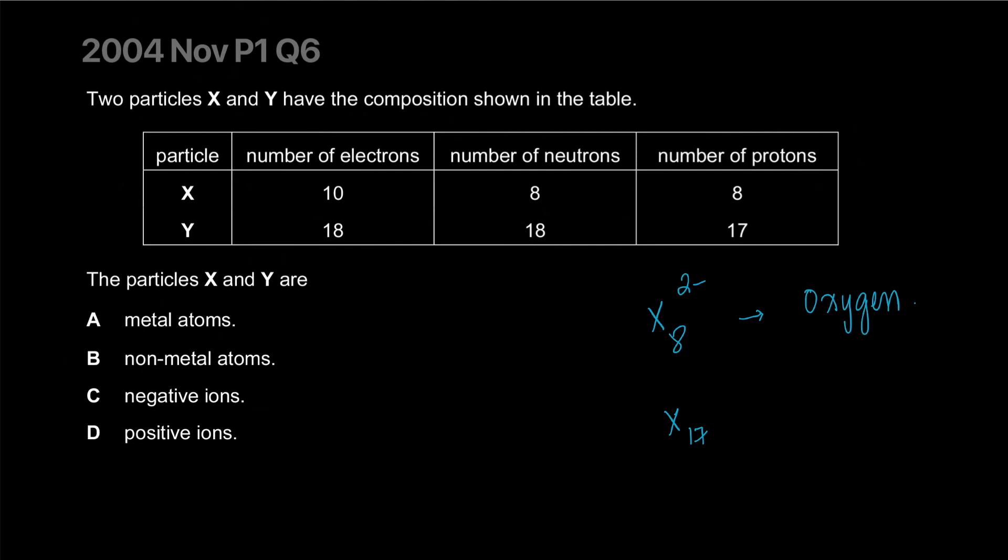Y has 17 protons. I think that's chlorine. It has one negative charge because it has one more electron. The particles X and Y are negative ions. They're not metal because oxygen isn't. They're negative ions, both of them. I'm pretty sure we're talking about chlorine. The answer is C.